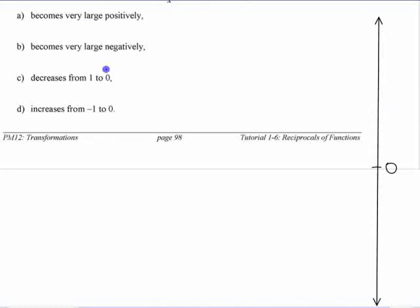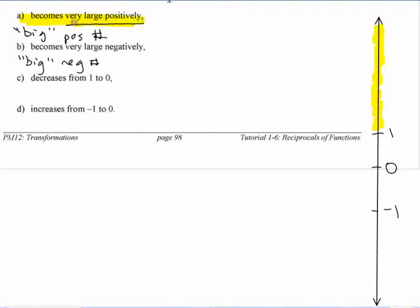I'm going to give you a very scientific definition of this, but I'm going to call these things becomes very large positively. We're going to call this a big positive number. Becomes very large negatively, a big negative number. Decreases from one to zero. So I'm going to mark one and negative one on here. So there's four spots in there. There's this, which we're calling big positive numbers. Okay, those are big positive numbers.